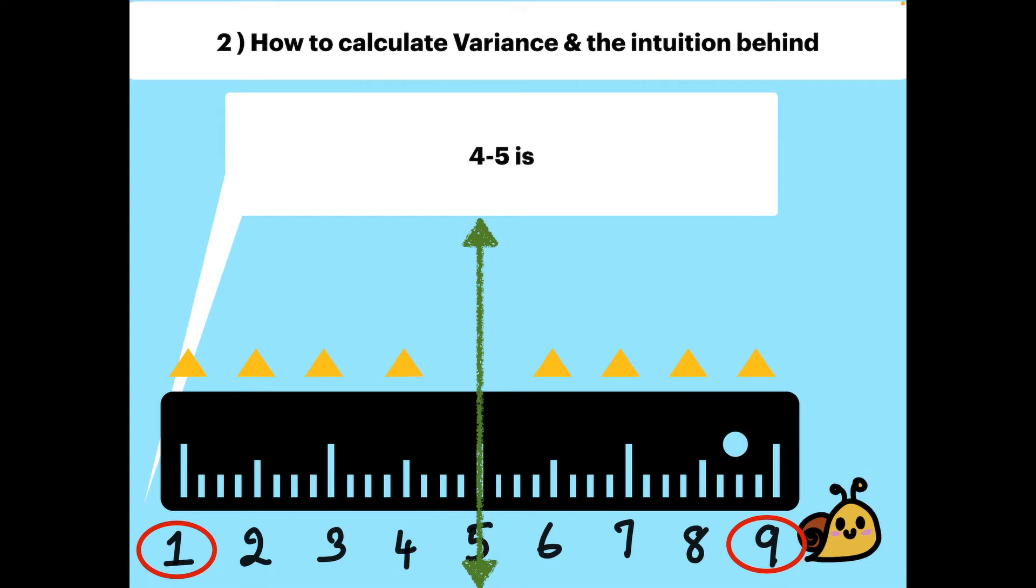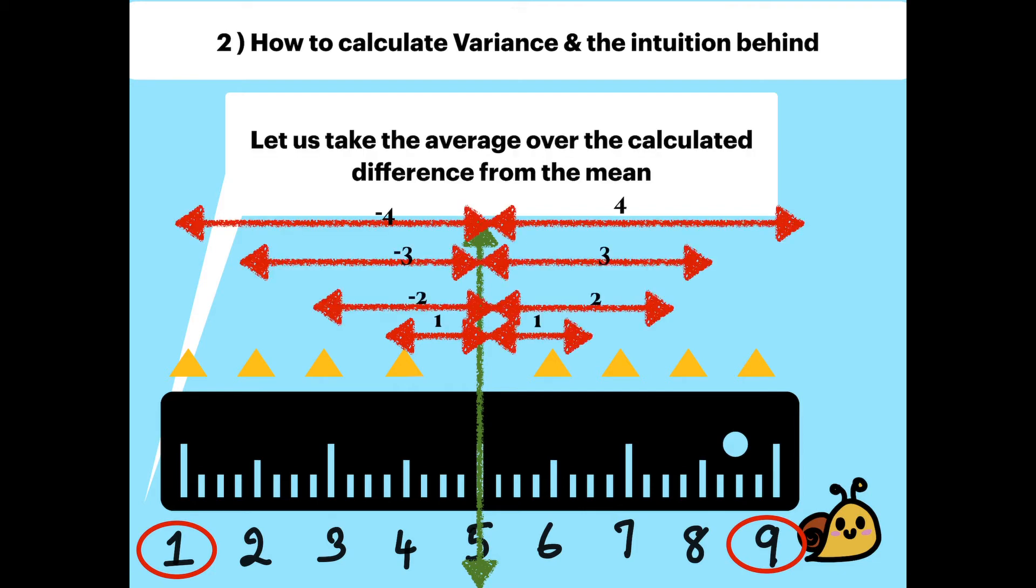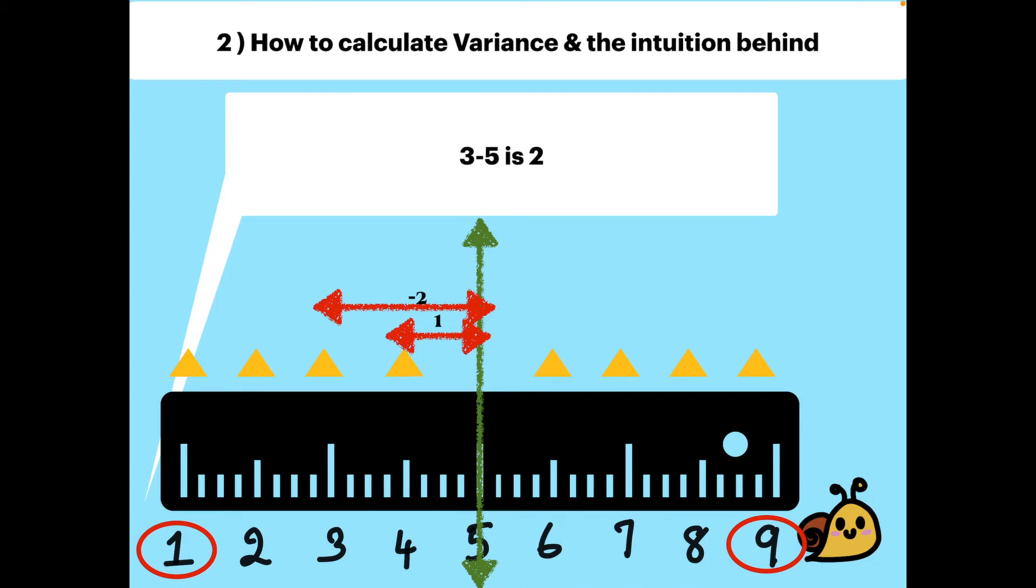So that is 4 minus 5 equals minus 1. 3 minus 5 is minus 2. Let's calculate all the differences to all the data points.